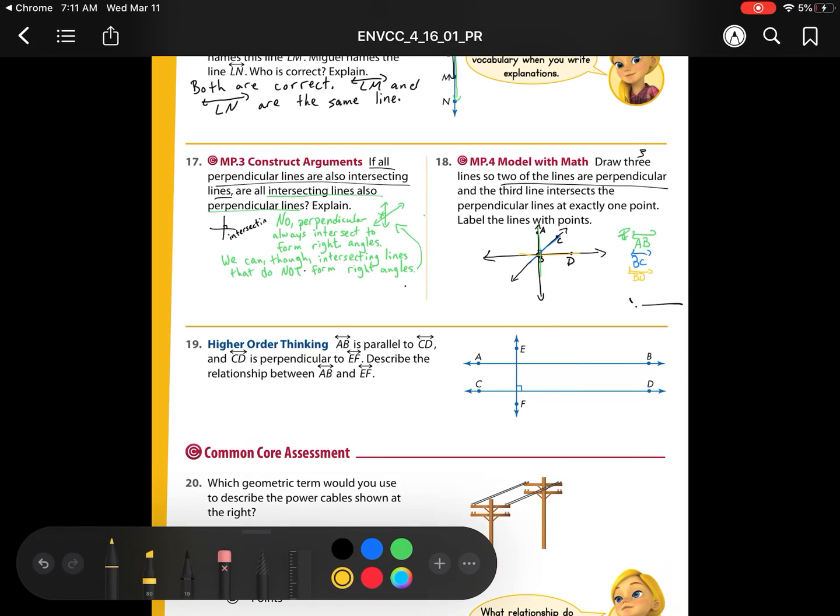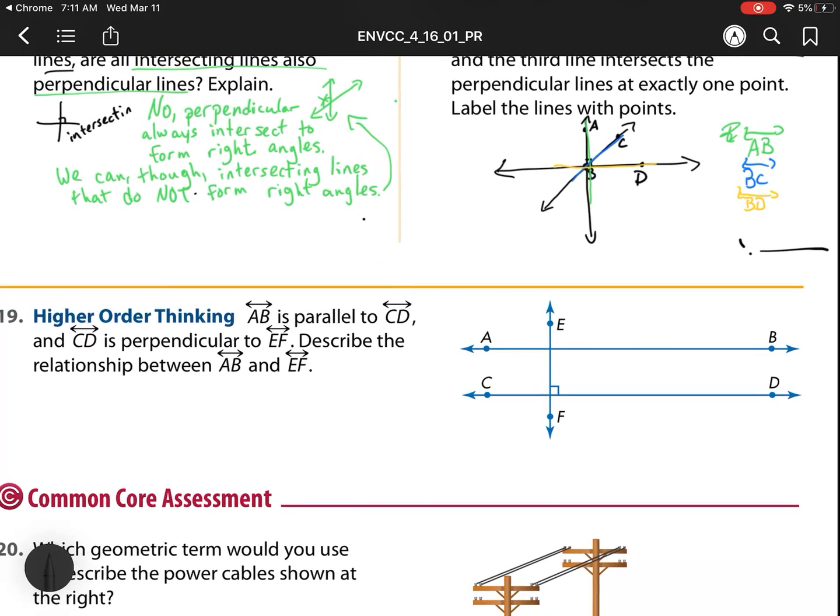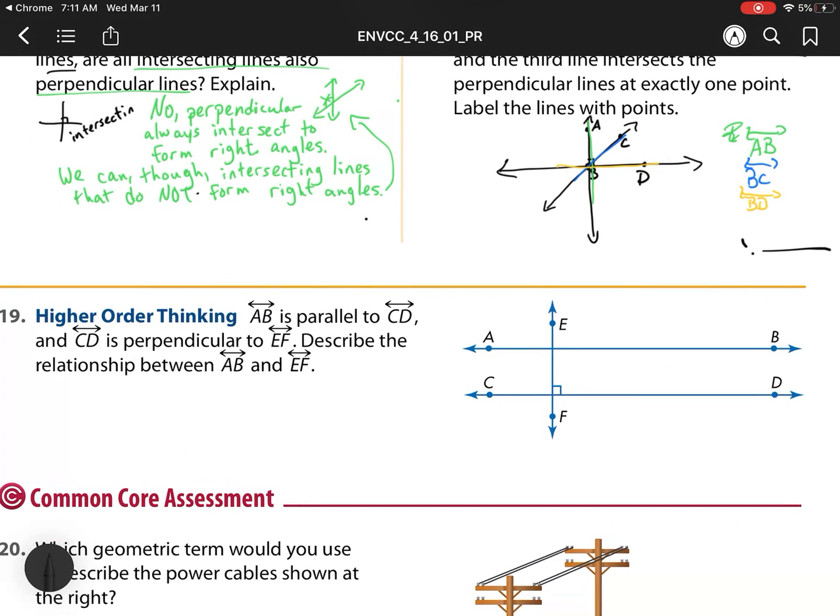Now our next one, we have two more left. AB is parallel to CD and CD is perpendicular to EF. Describe the relationship between AB and EF. Well, what do we notice about that? We notice that this looks like it's a right angle. So it means that they are perpendicular. So the relationship is that they are perpendicular.